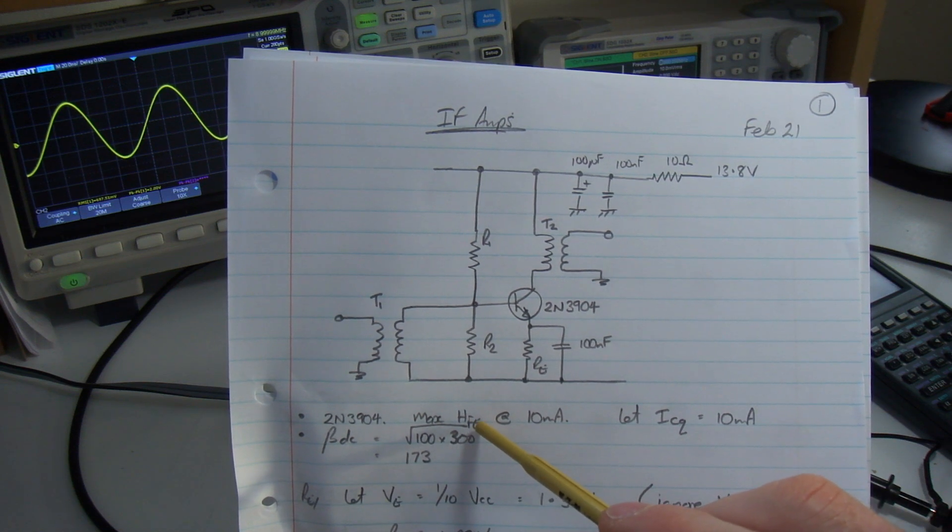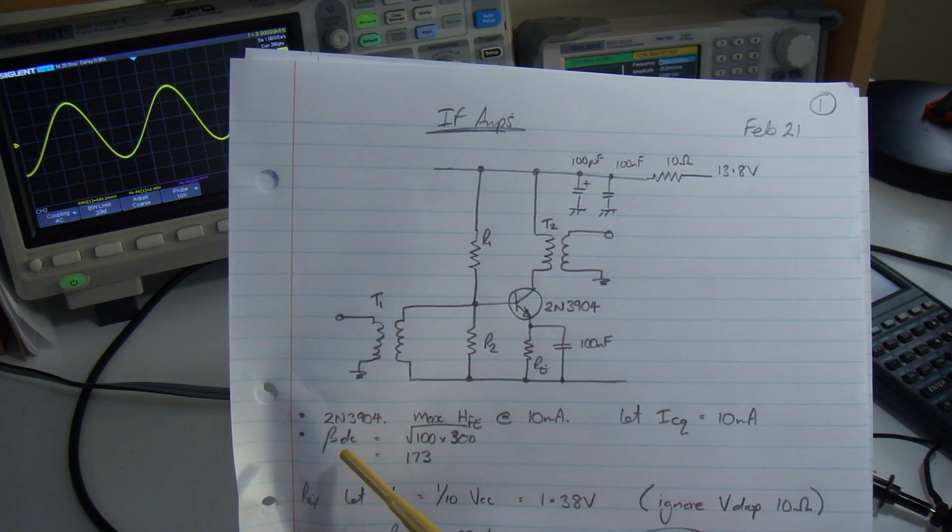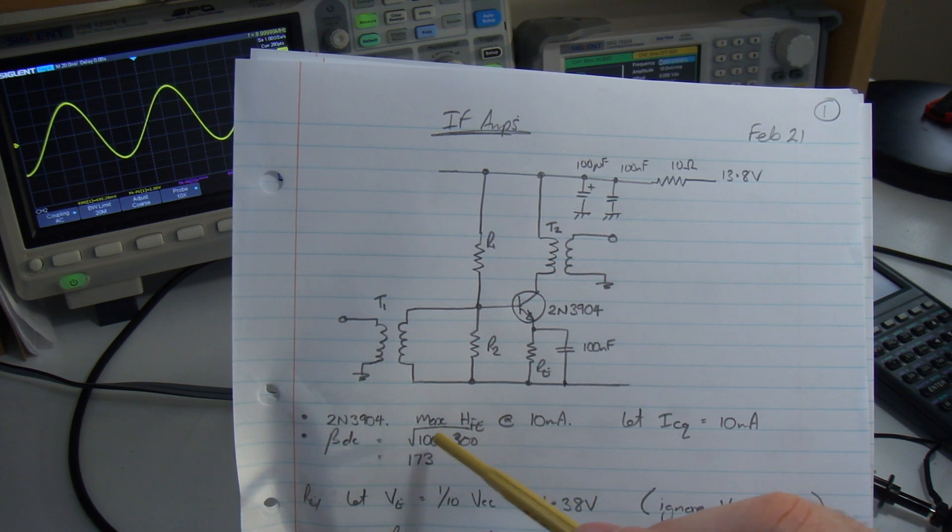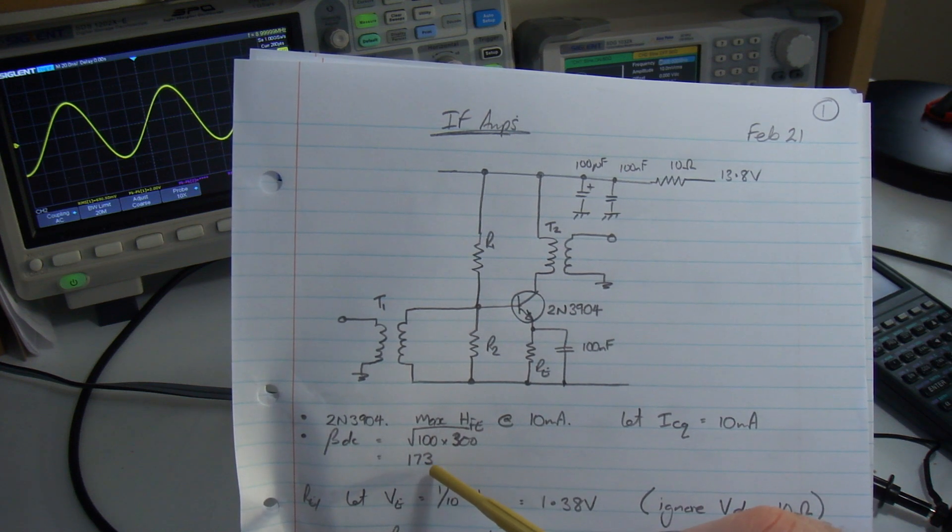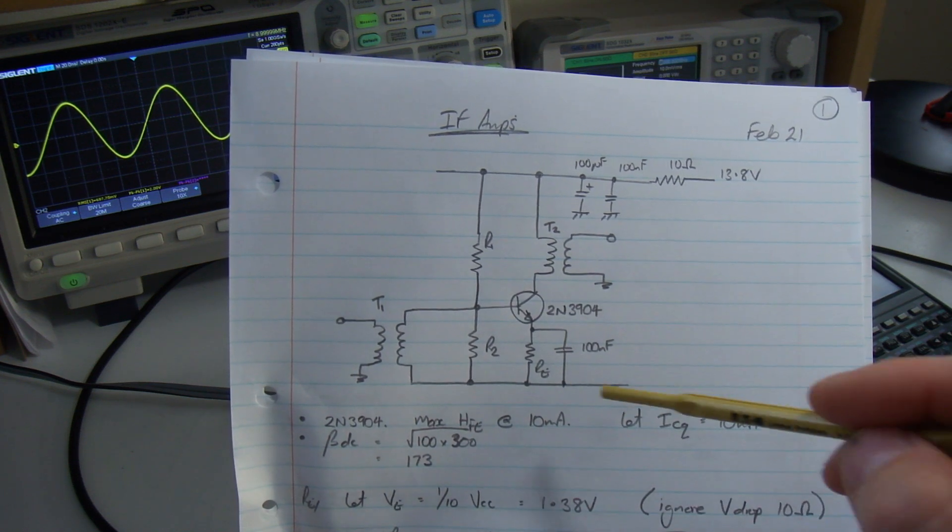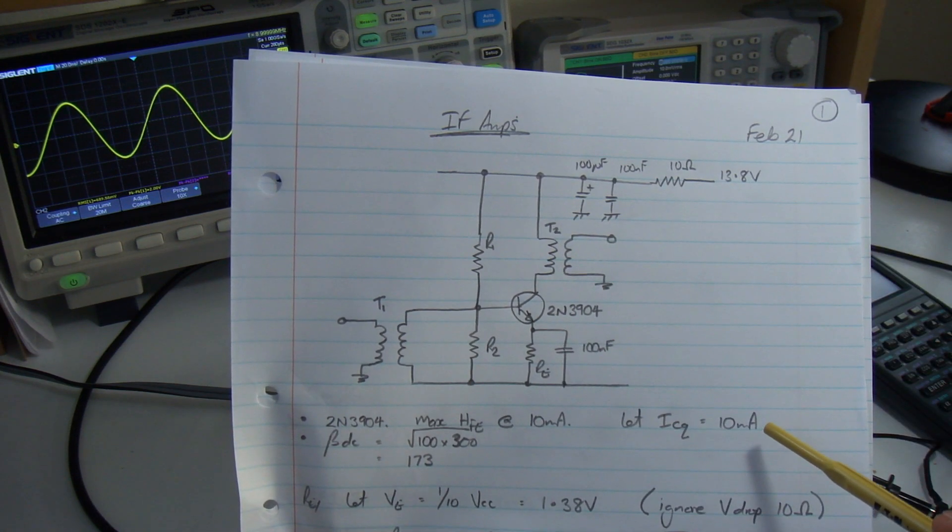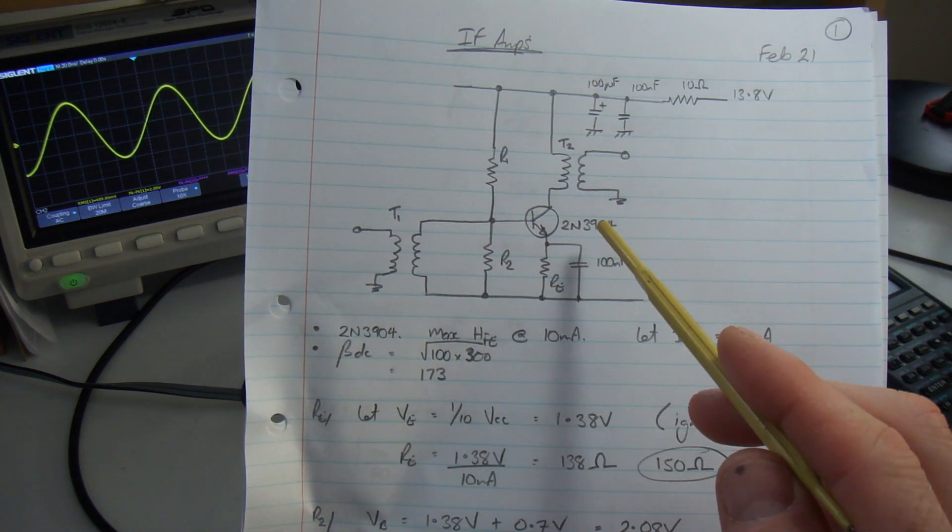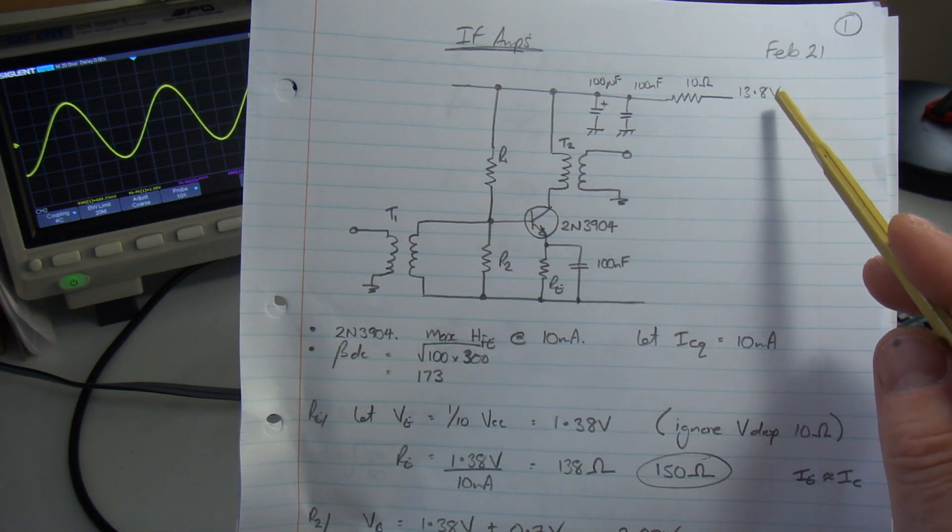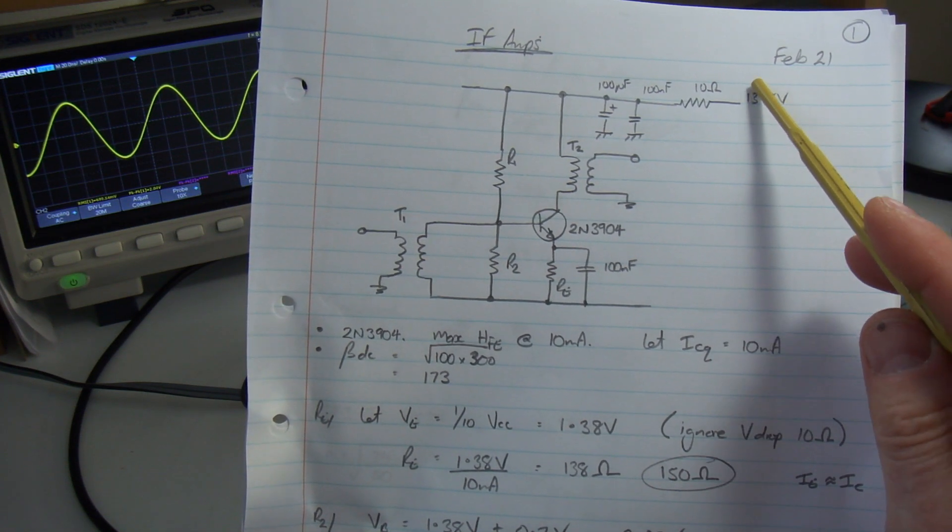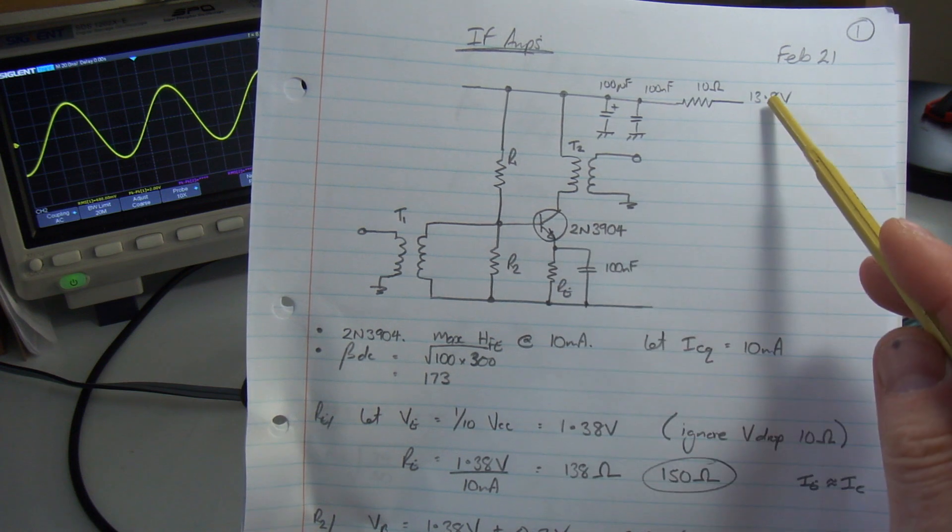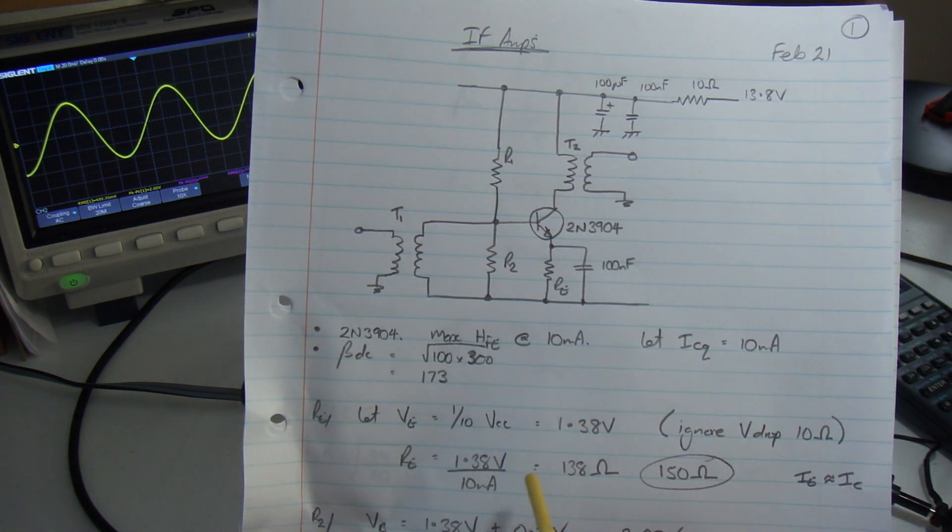The range of HEFE at 10 milliamps is 100 to 300. So I'm going to take the geometric mean for my calculations. Beta DC is going to be the square root of 100 times 300, which comes out at 173. Because I'm operating this at 13.8 volts, I'm going to set the emitter voltage to be a tenth of VCC, so 1.38 volts.